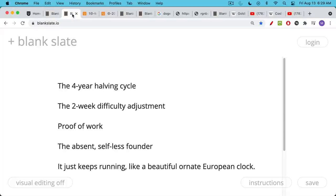When I look at Bitcoin, when I see the four-year halving cycle, when I see the two-week difficulty adjustment, when I see its basis for consensus in proof of work and the complete absence of a founder, a founder who was so selfless that he left the project really early on and allowed it to flower and develop on its own,